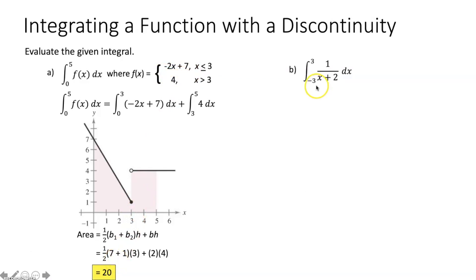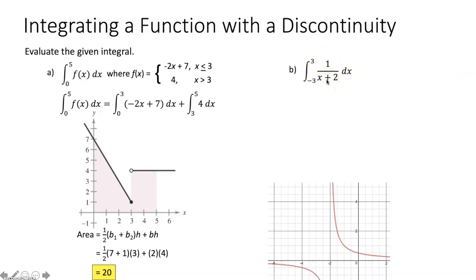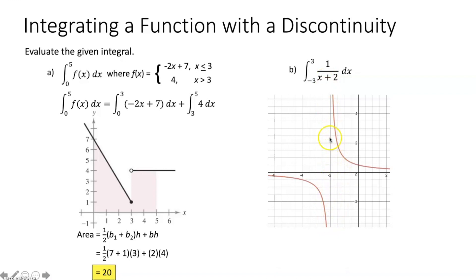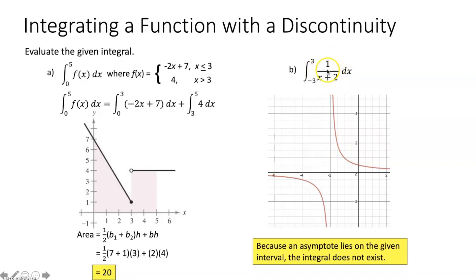Part b evaluates the integral from negative three to three of one over x plus two dx. This rational function has a vertical asymptote at x equals negative two, since that causes the denominator to equal zero. Because there's a vertical asymptote on the interval, the area goes on forever in either direction, so there's no way to calculate the area. Therefore the integral from negative three to three of one over x plus two dx does not exist.